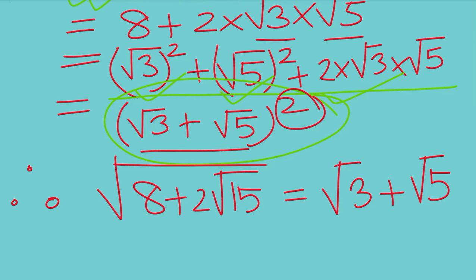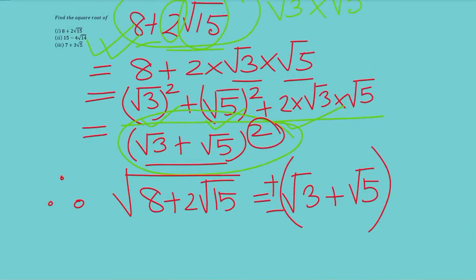Now, you have already studied about the plus-minus thing: whenever we take the square root we put a plus and a minus. In this case also you can put plus and minus before the square root result, so the answer is ± (root 3 + root 5) for the square root of 8 + 2 root 15.